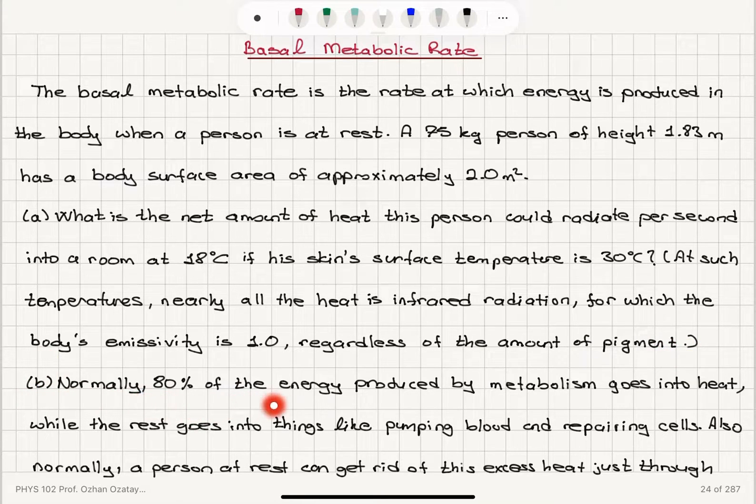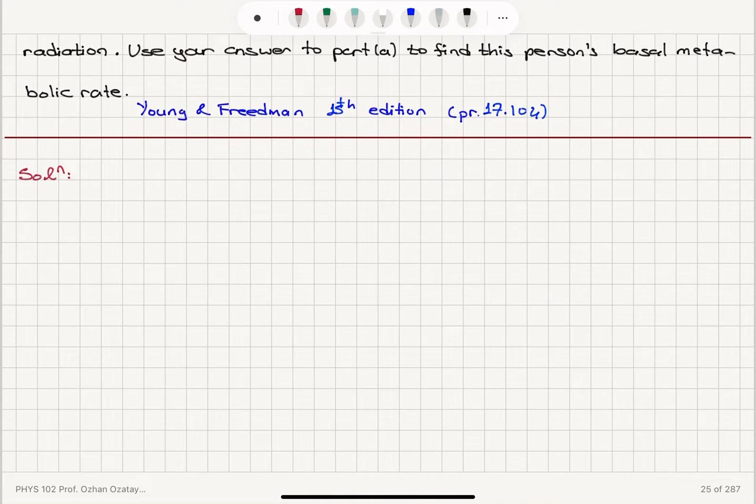Normally 80% of the energy produced by metabolism goes into heat while the rest goes into things like pumping blood and repairing cells. Also, normally a person at rest can get rid of this excess heat just through radiation.